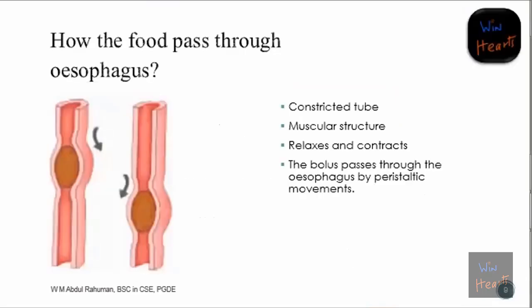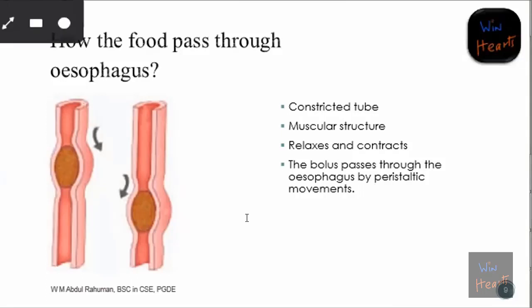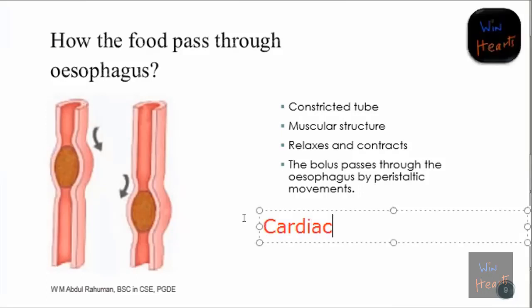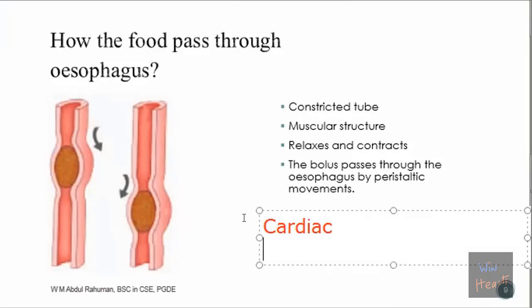The esophagus is a constricted, highly elastic tube made up of muscles - it is a muscular structure. There are three different types of muscles in our body. Can you remember them? One is cardiac. The other two are smooth muscle and skeletal muscle.